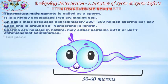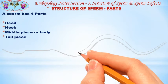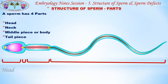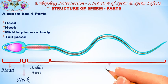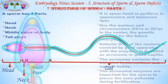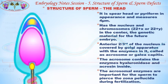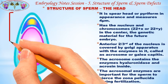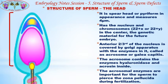A sperm has four parts: the head, neck, middle piece (or body), and tail piece. First, let's see the head of the sperm. It is spearhead or pyriform in appearance and measures around four microns.